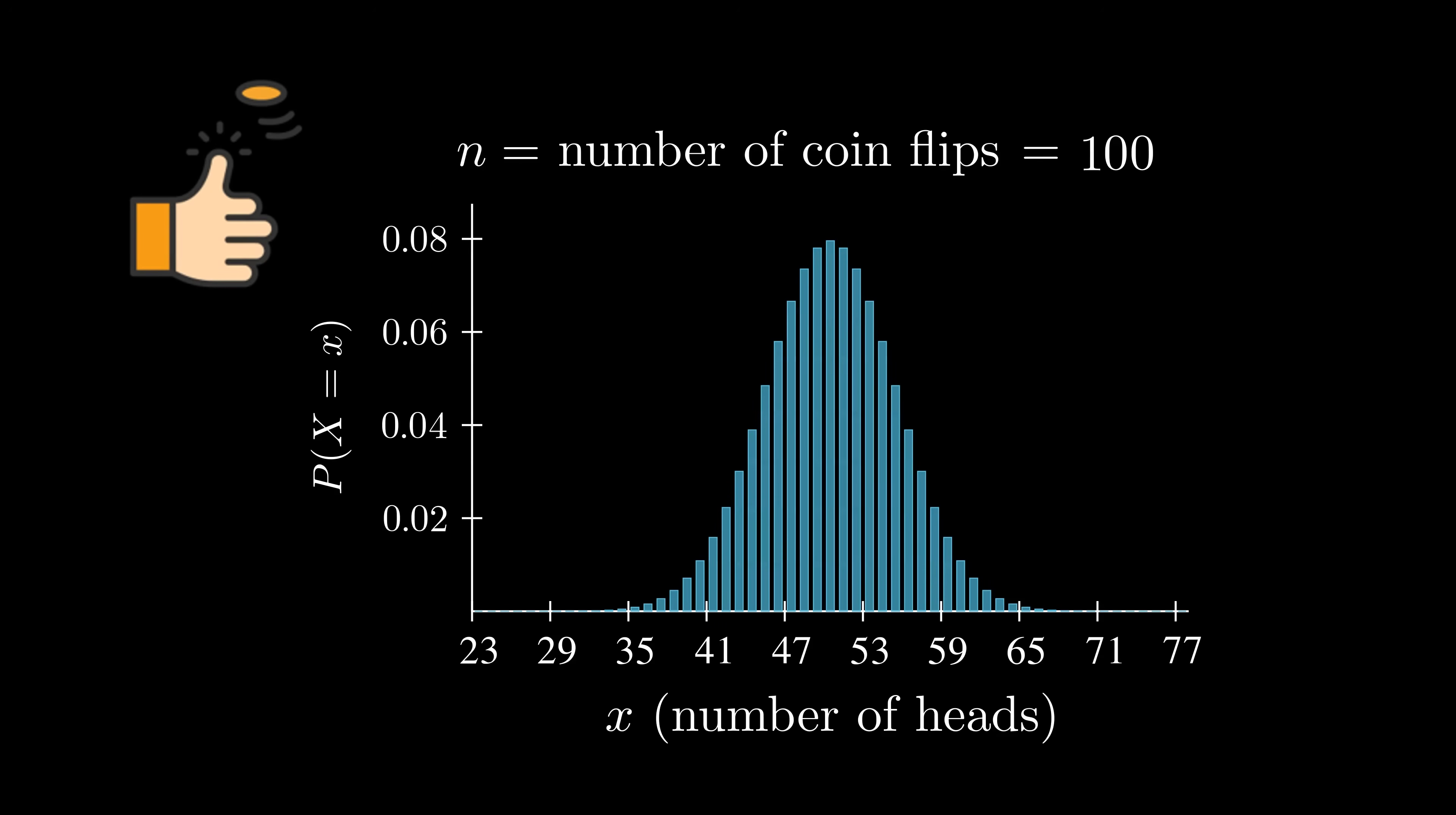This kind of distribution is called a binomial distribution, and it comes up whenever we repeat some two-outcome event multiple times, like flipping a coin.